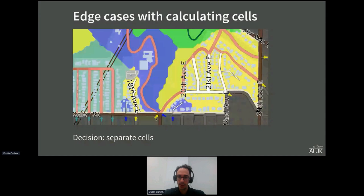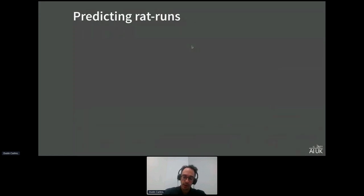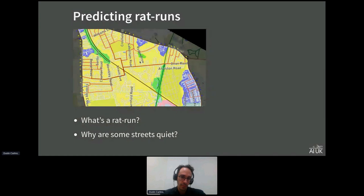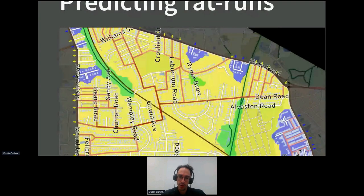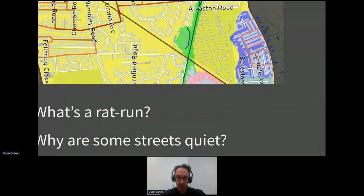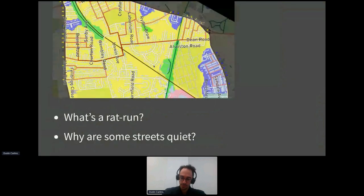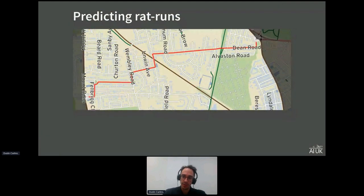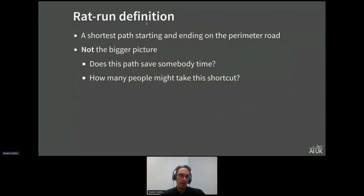Now let's talk about how the rat run prediction works. The heat map's deeper red shows where there are more ways to take a shortcut through the neighborhood — colloquially a "rat run" — while white streets have no reason for through-traffic. To formalize it: a rat run is a shortest path that starts and ends somewhere on the perimeter road and goes through the middle of the neighborhood.